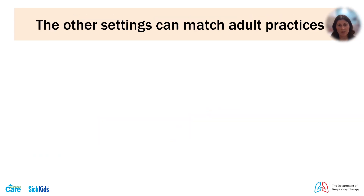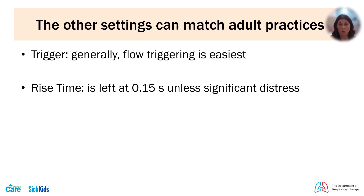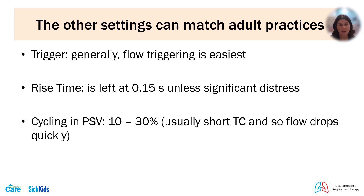Other ventilator settings generally match what you would set in other populations. For trigger, use flow triggering in the most sensitive range for the patient. For rise time, we generally leave it at 0.15 or 0.1 seconds unless there is significant distress. For cycling on pressure support, it is generally set between 10 and 30%, assuming no leak. Small neonates may have a short time constant, so flow drops relatively quickly — we may choose a lower cycling threshold of 10% to allow slightly more inspiratory time and avoid tachypnea.